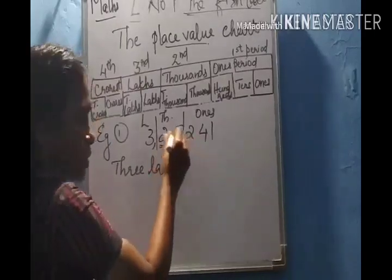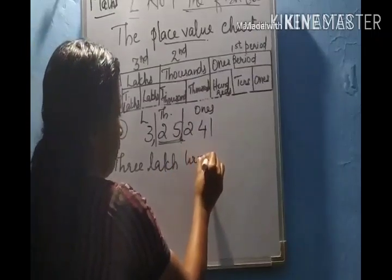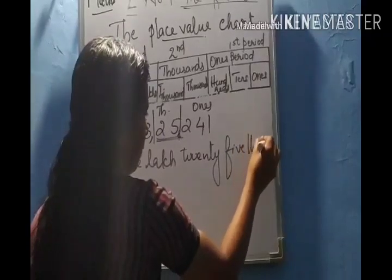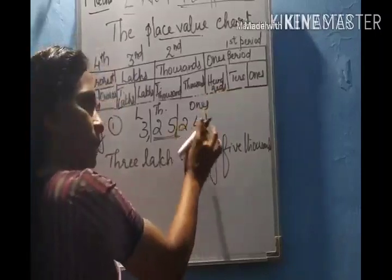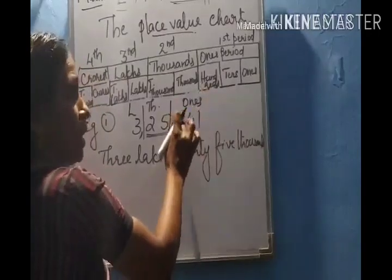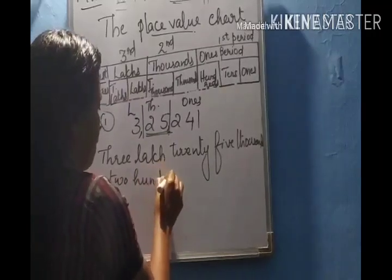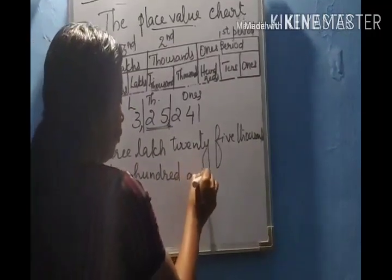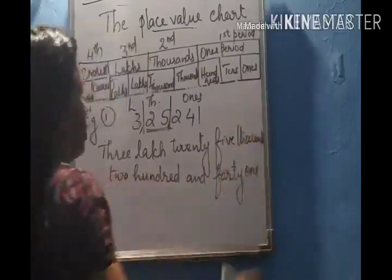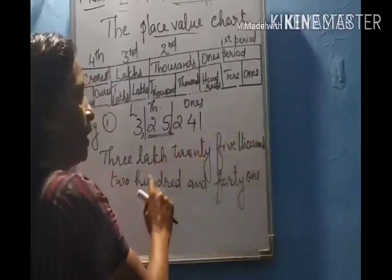Both digits in the thousands period you have to read together. How many thousands? Twenty-five thousand. The remaining three digits in the ones period we have to read together. How many ones? Two hundred and forty-one. So the given number is three lakhs, twenty-five thousand, two hundred and forty-one.